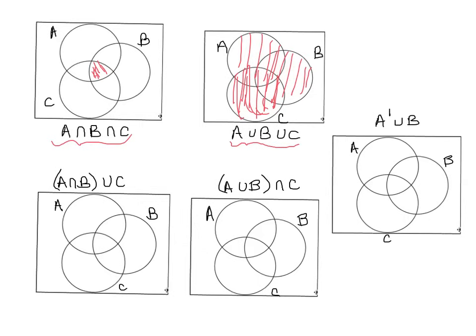For A intersect B union C: first shade A intersect B — the overlap of A and B — and since it's a union with C, also shade everything in C. That gives you A intersect B union C.